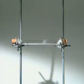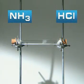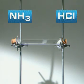The white solid is closer to the hydrogen chloride end of the tube, on the right, so which gas has travelled faster?